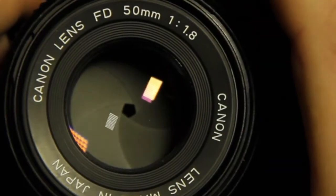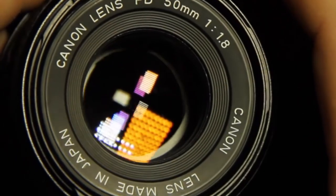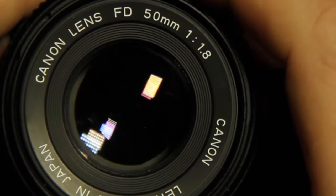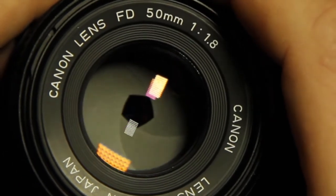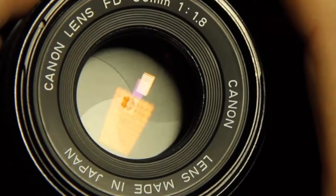A low f-stop, like f2.8, means the aperture is wide open because what you are filming is dimly lit. A high f-stop, like f11, means the aperture is closed down because what you're filming is extremely bright.